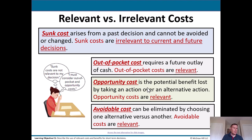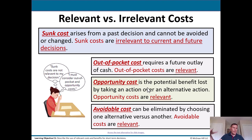A good example of opportunity cost: you're all attending college, and you could have just graduated high school and gotten a job. Instead, you chose to go to college, so there's an opportunity cost associated with the lost wages while you're in college.